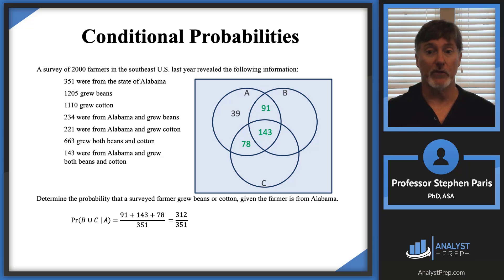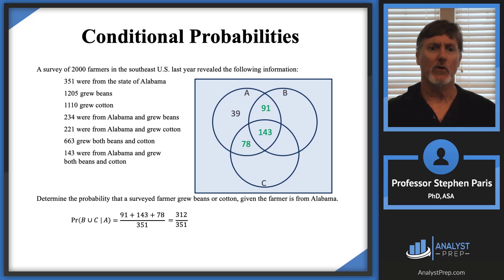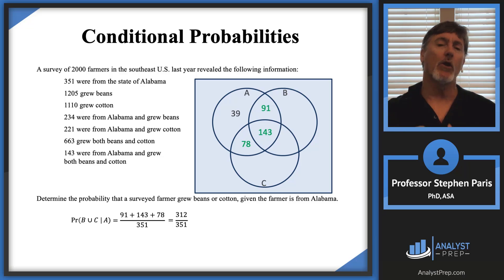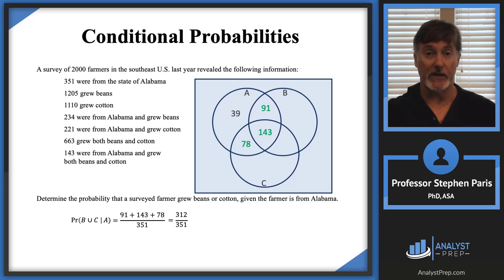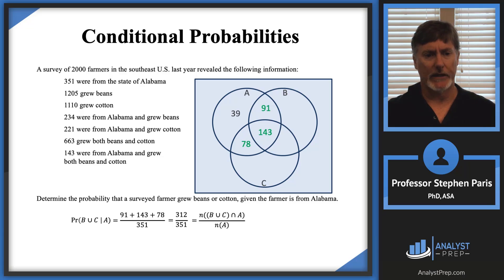Let's look more closely at the numerator. How can we describe those in green? Those are the farmers who are in B ∪ C who are also in A, because I restricted everything to the farmers being in set A. Mathematically, I write that as (B ∪ C) intersected with A.